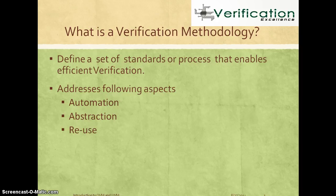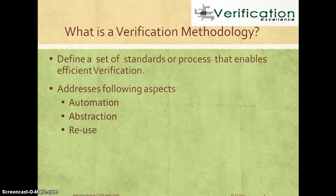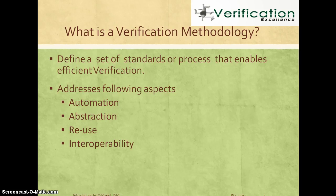By automation, I mean you wouldn't want to do a lot of tasks manually across projects or across different levels of verification — you'd want to automate as much as possible. You'd also want to abstract a lot of information; you wouldn't want to spend effort writing pin level or signal level monitors or drivers. You'd want to abstract information to enable reuse across projects or across block to chip level verification. You also want interoperability — a set of verification processes that work across different tools or vendors. And you would want to address quality aspects because ultimately you want to find bugs early in the design lifecycle.